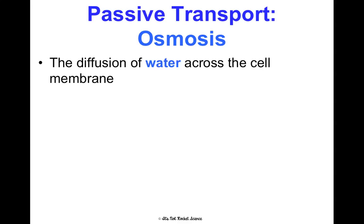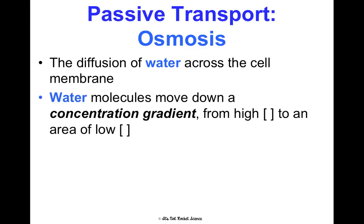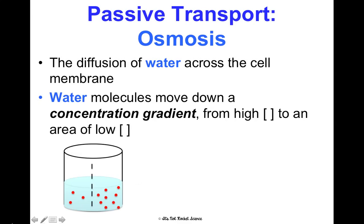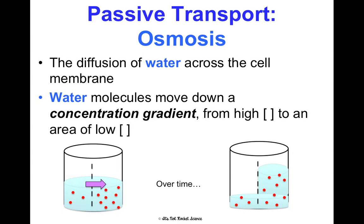Osmosis is the diffusion of water specifically across the cell membrane. Water molecules move down the gradient from where there's a high concentration of water to where there's a low concentration. For example, in a beaker divided by a membrane, if one side has more dissolved lemonade powder, it has less water. Water will move toward that side — from more water and less solute to less water and more solute — until concentrations are balanced.